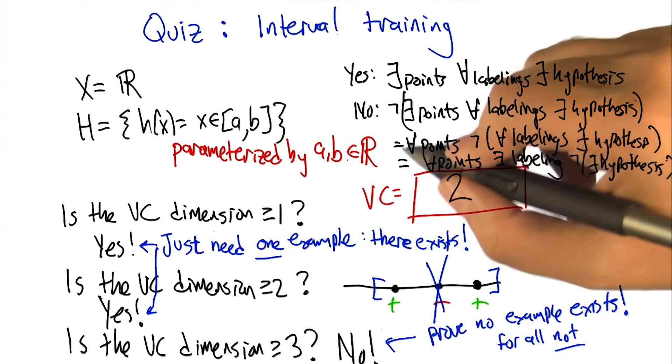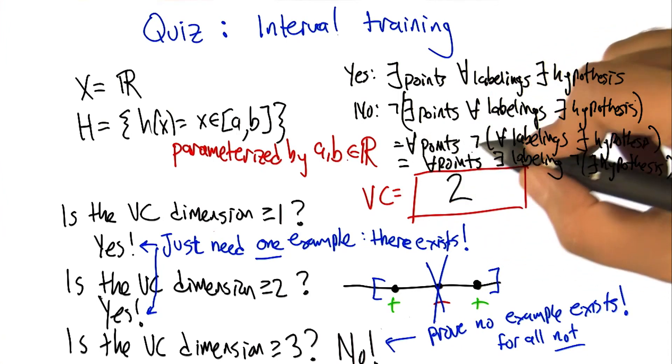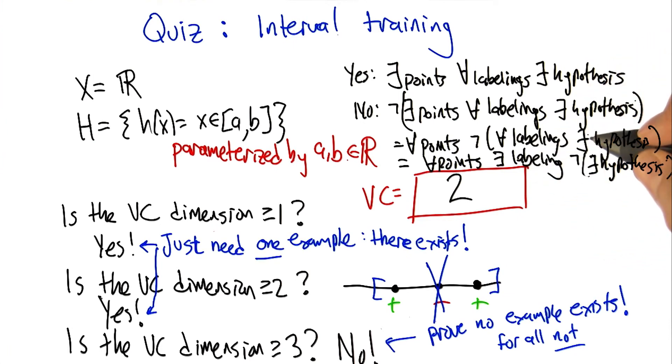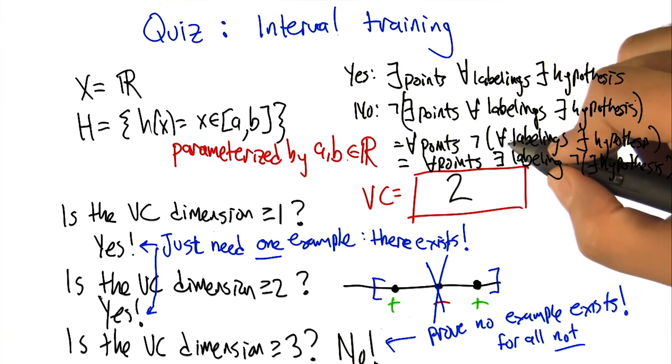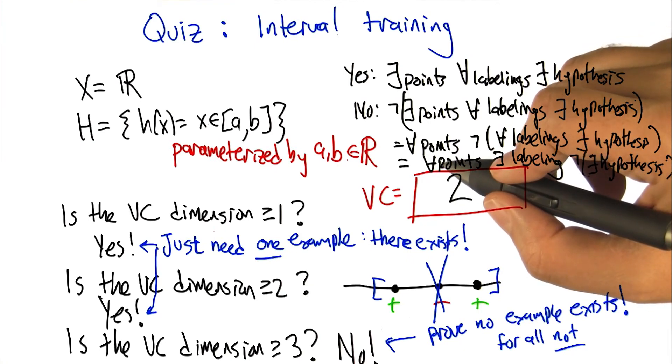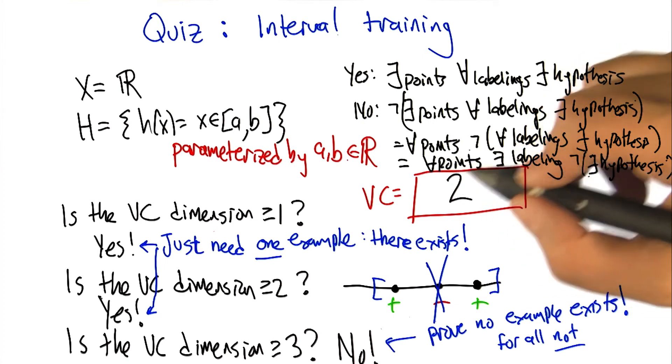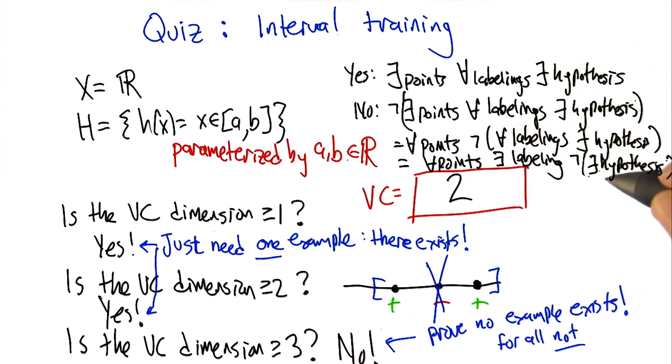But to say no, we have to do the negation of that, which is not exist for all exists, which by standard logic rules says that, that means that for all points, no matter how you arrange the points, it's not the case that for all labels, there exists a hypothesis, which again, De Morgan's law, is not against De Morgan's law to apply this idea that says, that's the same as for all arrangements of points, there's some labeling where there's no hypothesis that's going to work. And that's exactly how you made your argument.